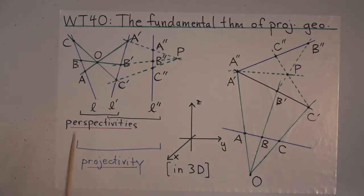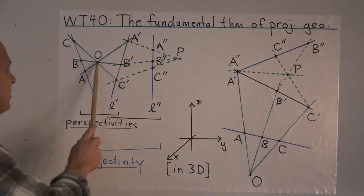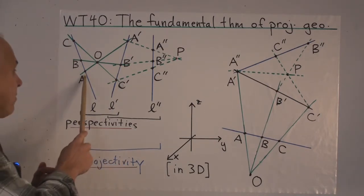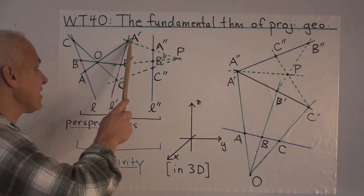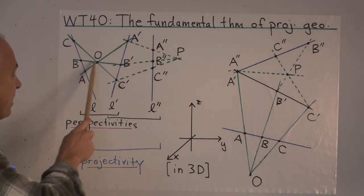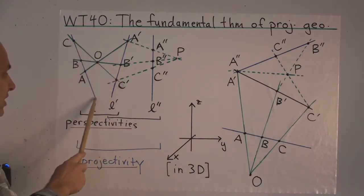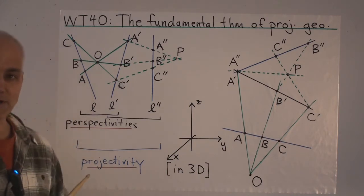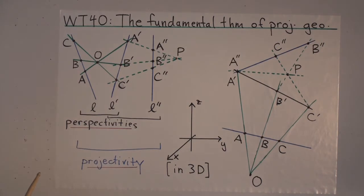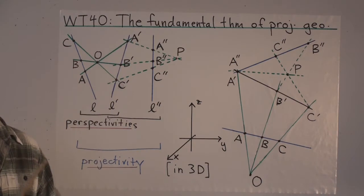What does that mean? Here's a line L and here's a line L prime, and here's a point O which we're going to use as a center of perspectivity to coordinate points on this line with points on this line. So through O we draw lines connecting A to A prime, B to B prime, C to C prime, and we can continue to do that for all the points on line L, associating them to points on L prime. That association of points on L to points on L prime is called a perspectivity.